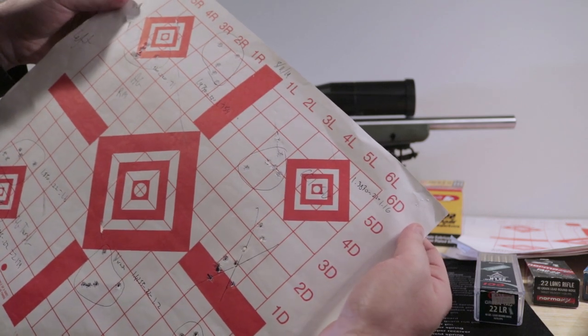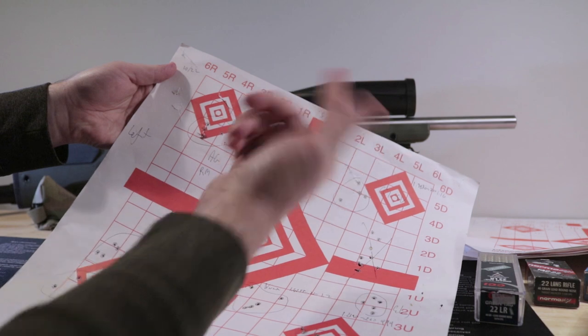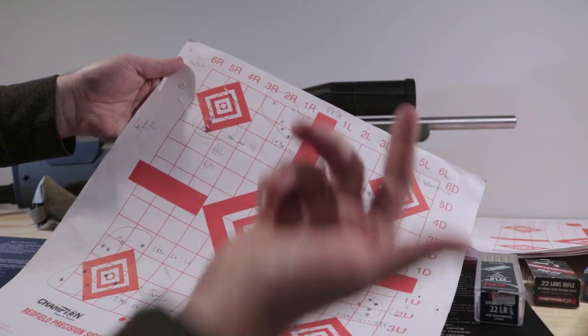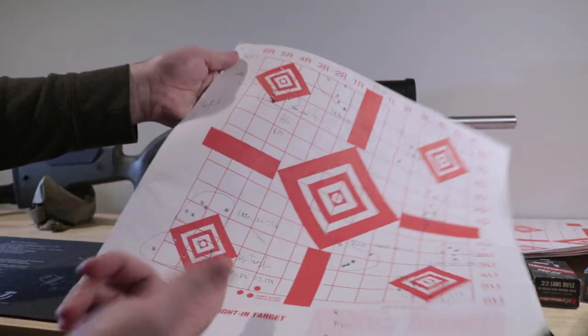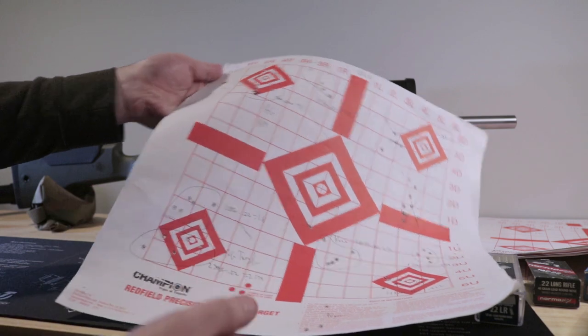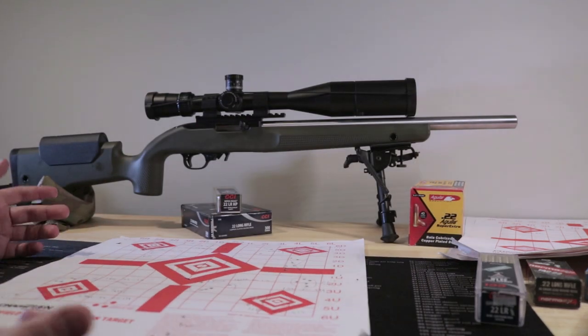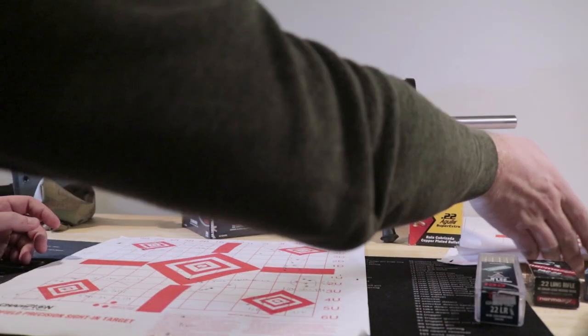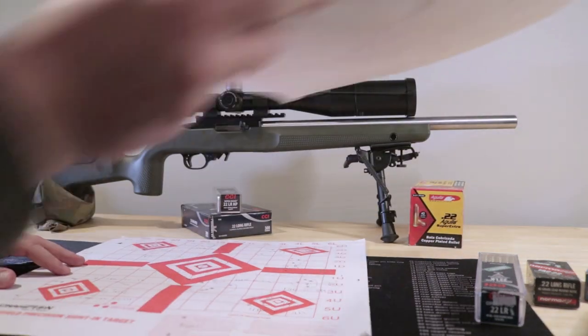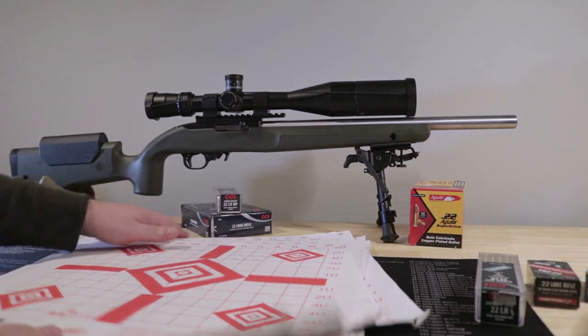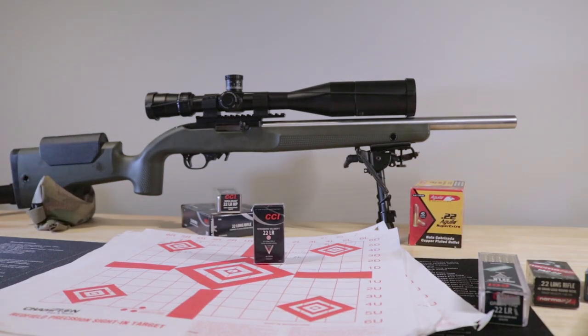Aguila, 1.7. But then it shoots 1.7 right next to it. And Aguila Target, 1.6, 2.2. So again, this Standard Velocity is just very, very consistent and very, very cheap. So I think for this project, this is going to be what I go with.